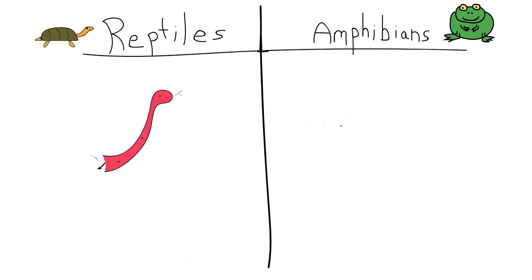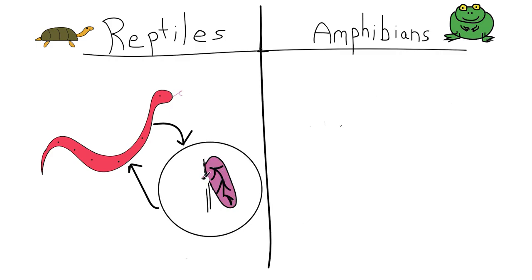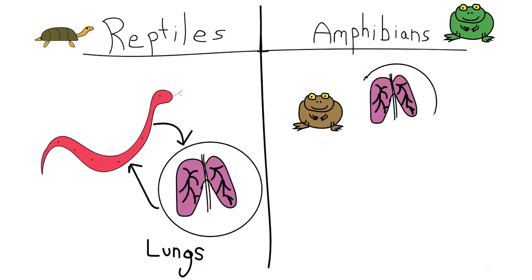A final important difference is that all reptiles have lungs. They breathe oxygen from the air. Only some amphibians have lungs, and although they breathe through the air, they also absorb oxygen through their skin.